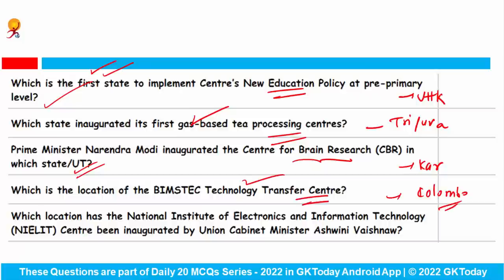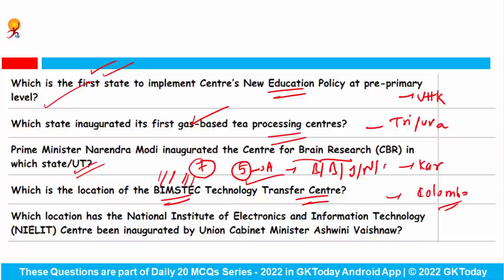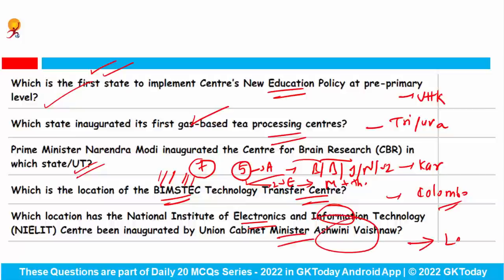Which is the location of the BIMSTEC Technology Transfer Center? The answer is Colombo. BIMSTEC stands for Bay of Bengal Initiative for Multi-Sectoral Technical and Economic Cooperation. It consists of seven countries — five from South Asia: Bangladesh, Bhutan, India, Nepal, and Sri Lanka; and two from Southeast Asia: Myanmar and Thailand. The National Institute of Electronics and IT center was inaugurated by Union Cabinet Minister Ashwini Vaishnaw in Leh.